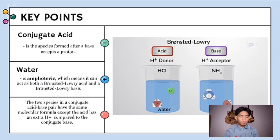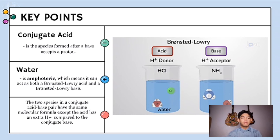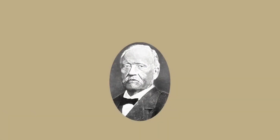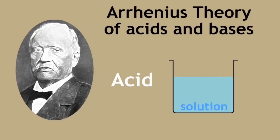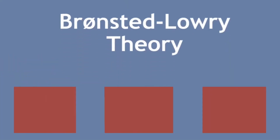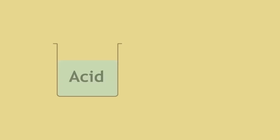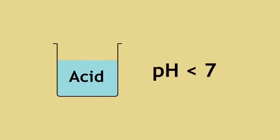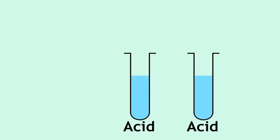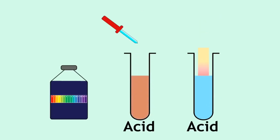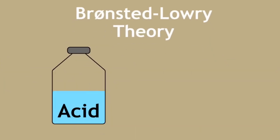Water is amphoteric, which means it can act as both a Bronsted-Lowery acid and a Bronsted-Lowery base. The two species in a conjugate acid-base pair have the same molecular formula, except the acid has an extra H⁺ compared to the conjugate base. The Bronsted-Lowery theory does not rely on pH, unlike the Arrhenius theory. Acids that have a pH lower than 7 can be tested using universal indicator solution or paper. In an acid-base reaction according to the Bronsted-Lowery theory, a proton is transferred from one substance to another.